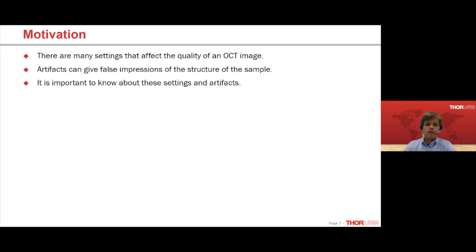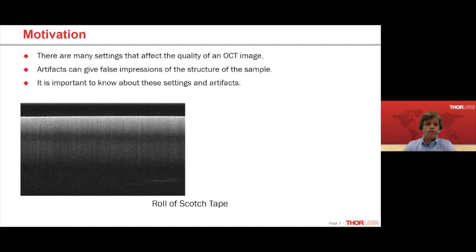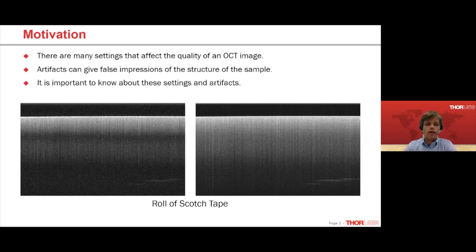I'll show you two examples of the same sample — a roll of scotch tape. On the left side you can see an OCT image where it's really hard to distinguish the individual layers stacked on top of each other, and there's a dark band in the middle. By changing the settings of this OCT system, I get the image on the right side: no dark band, and you can clearly see the individual layers. Just changing the settings can improve OCT image quality dramatically. It's easy to get an OCT image, but much harder to get a good one.